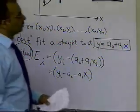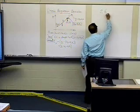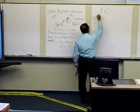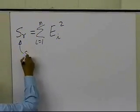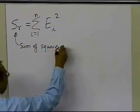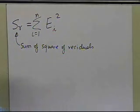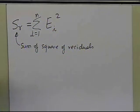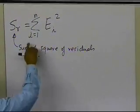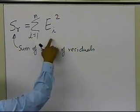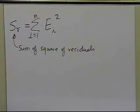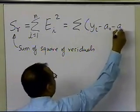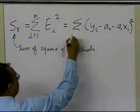What you want to do is make this residual small everywhere. One of the criteria used is to take the summation of all the errors, square them, and add them all up. This is called SR — the sum of the square of residuals — and that's what you want to make as small as possible. This method is called least squares regression: you square the errors, add all of them, and minimize them. So you minimize the summation of (yi - a0 - a1*xi)^2 for i = 1 to n.